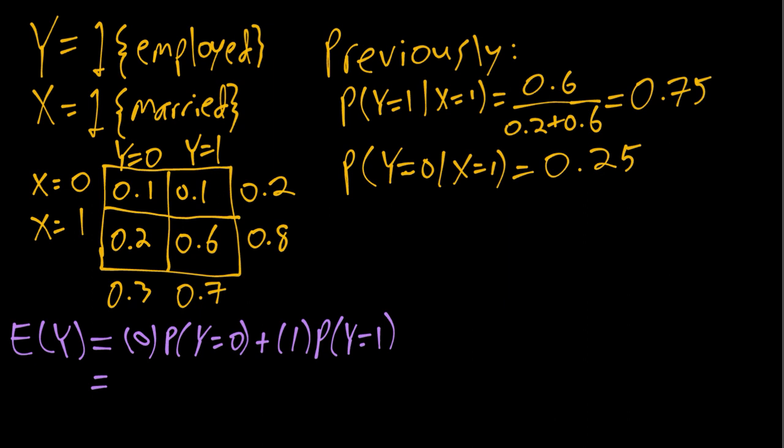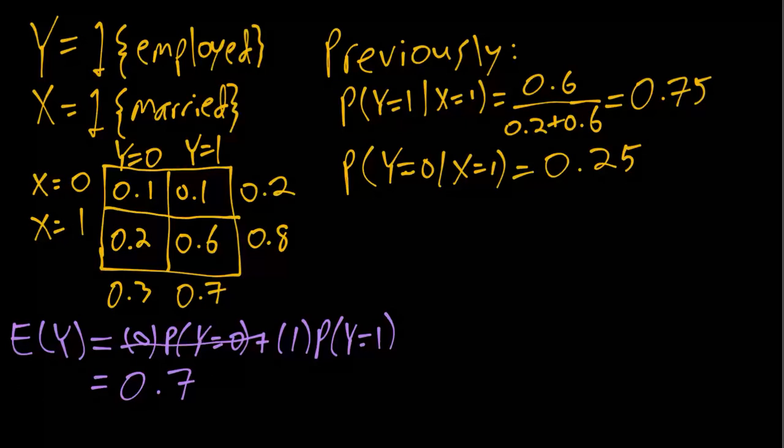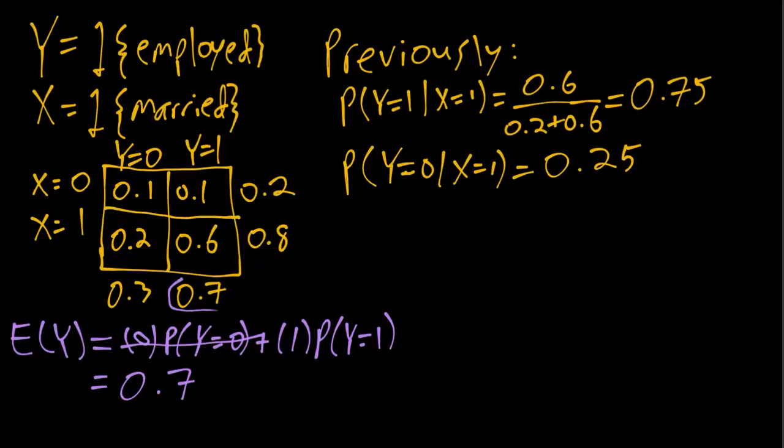Here in the first term since we have zero that just zeroes out anyway. Then we're just left with one times the probability y equals one which is 0.7. So that is the unconditional mean of y. Here, because we have this dummy variable or binary variable, that's also just equal to the marginal probability of employment. That's the interpretation for the mean.